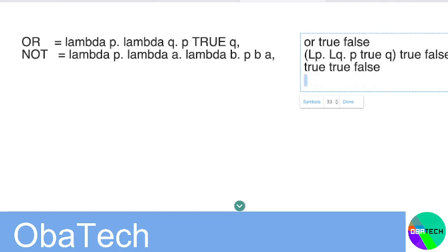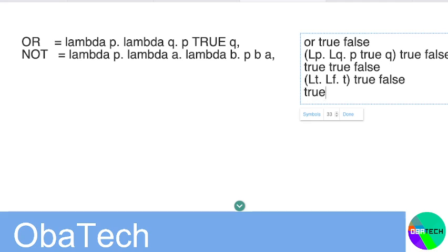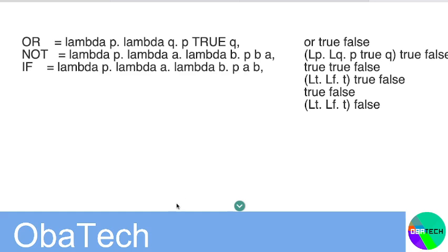So now let's run the true function. True function is basically LT dot LF dot T. So if you want this to work, you're going to need a special if function.